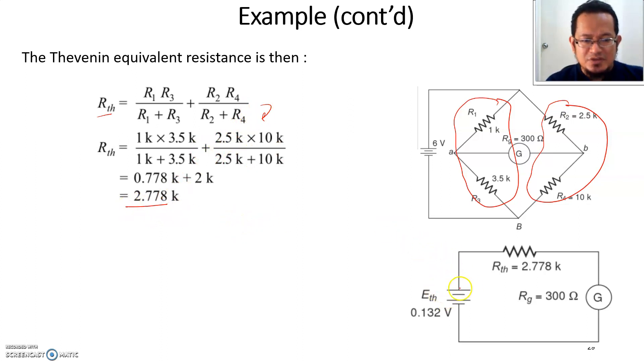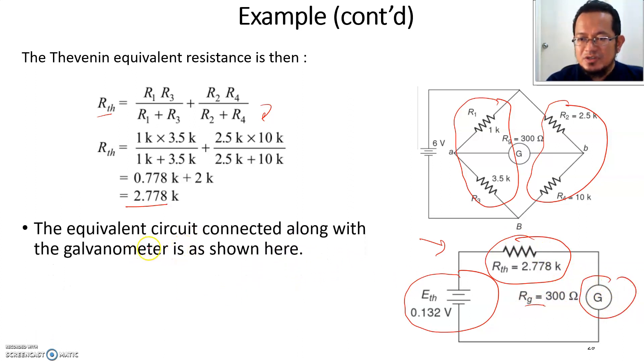Then you can draw the Thevenin equivalent circuit using this simplified circuit. The Thevenin equivalent circuit will show you one voltage source, which is the Thevenin voltage, and one equivalent resistance. There's another resistance connected which is the galvanometer resistance.